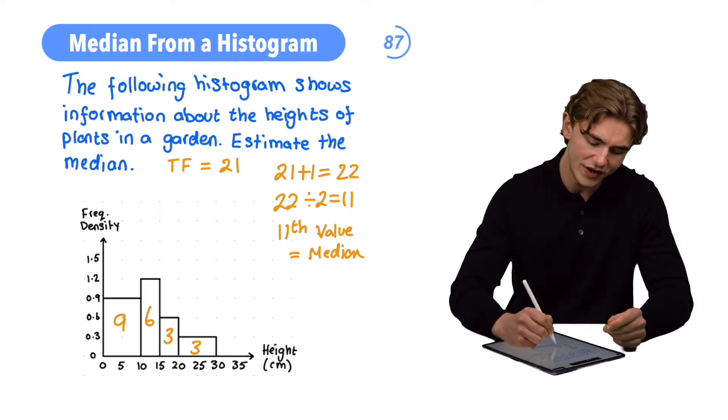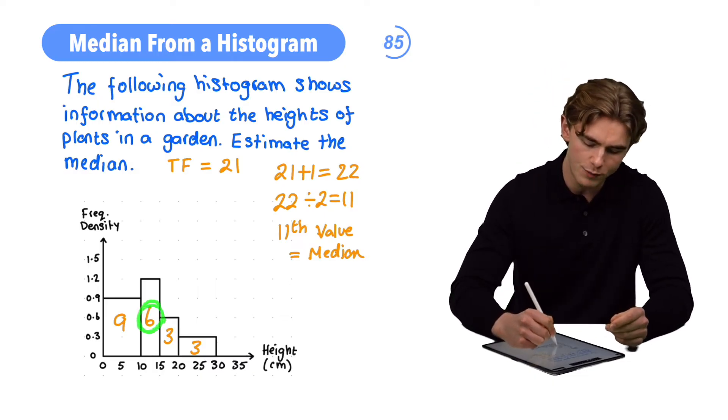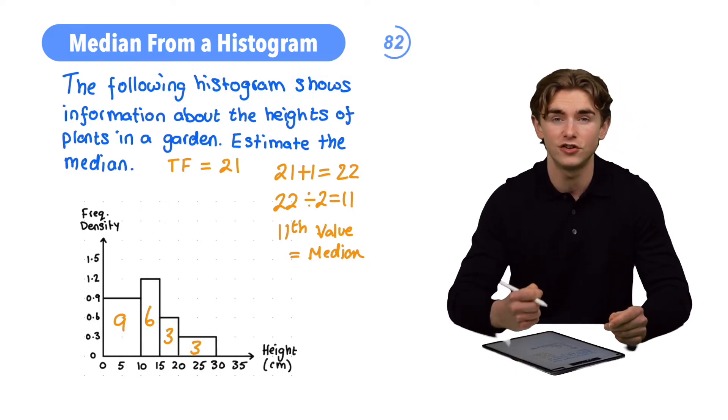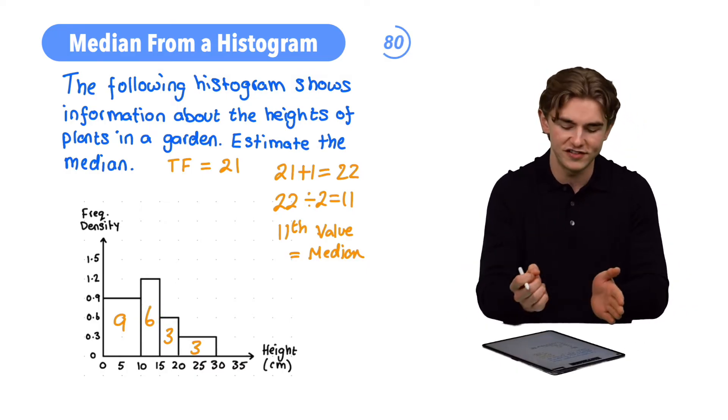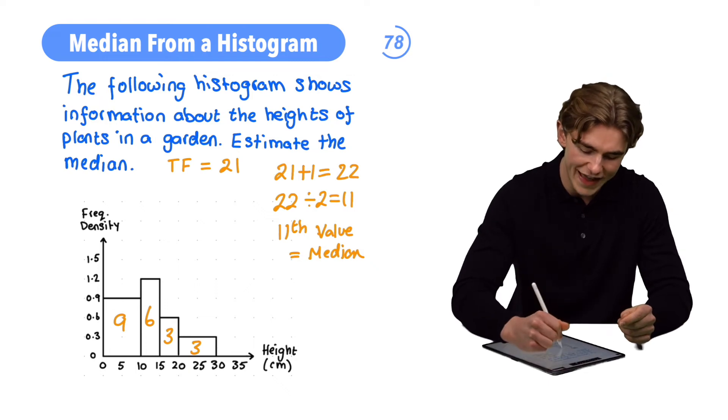Looking at this next bar, we can see that this bar represents a frequency of 6. We don't need 6 though, we need 2. 2 is going to be 1/3 of 6, so we need to go 1/3 into this bar.